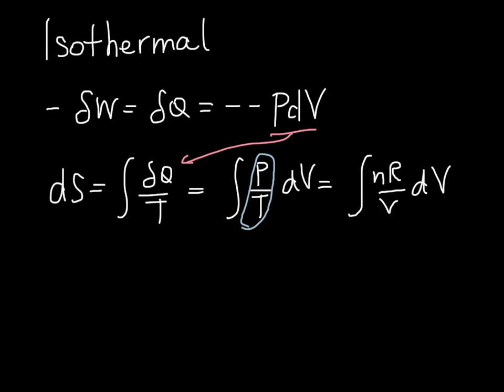And so we get delta S is equal to nR ln of V2 over V1. So this is the relationship for delta S for an isothermal system.